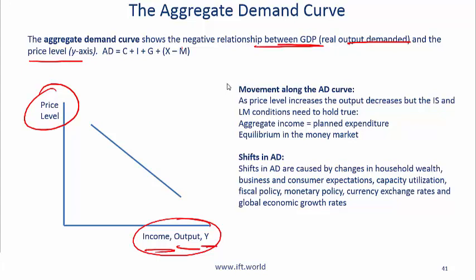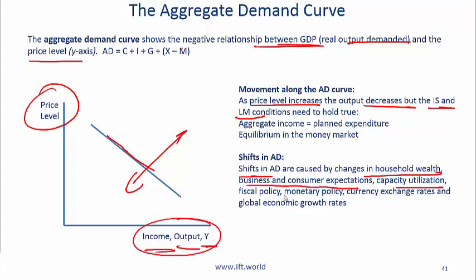As in microeconomics, we need to be aware of movements along the curve versus shifts. As long as the price level increases, output decreases — that is a movement along the curve, assuming IS and LM curve assumptions hold constant. Shifts in aggregate demand are caused by changes in household wealth, business and consumer expectations, fiscal policy, monetary policy, currency exchange rates, and global economic growth rates. For example, if household wealth goes up, aggregate demand shifts to the right. As always, if all else fails, use common sense.